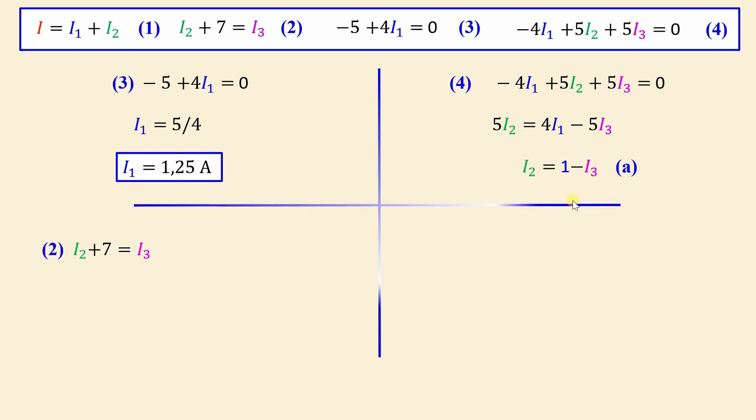We have equation 2 is I2 plus 7 is equal to I3. By replacing A in equation 2, we have 1 minus I3 plus 7 is equal to I3. Finally, you obtain 2 I3 is 8. That means I3 is 8 over 2, 4 amps.